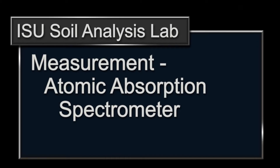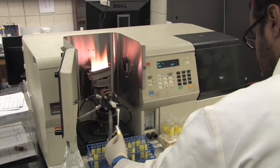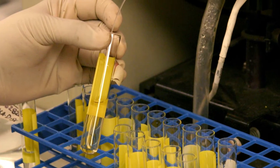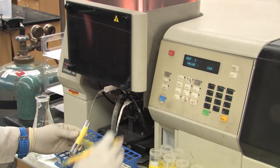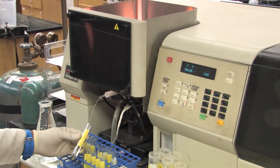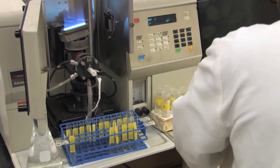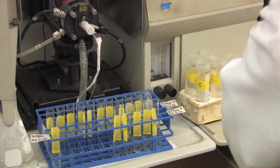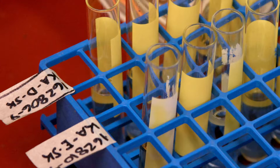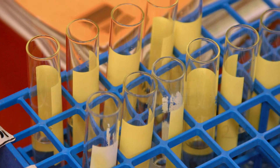An atomic absorption spectrometer is often used to determine potassium and can be used for other cations as well. A solution containing potassium is passed into a flame. The potassium atoms in the sample solution are raised to a higher energy state in the flame. As they cool, they fall back to their ground energy state and emit a specific wavelength of light — 766.49 nanometers — which is then measured. The intensity of the light is directly proportional to the concentration of potassium in the sample.